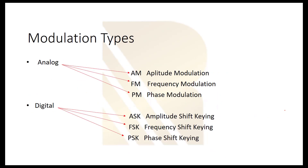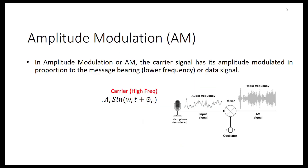So let's talk about some modulation types. We have analog and digital modulation. Analog includes AM — amplitude modulation, FM — frequency modulation, and phase modulation. For digital we have ASK — amplitude shift keying, FSK — frequency shift keying, and PSK — phase shift keying. Let's start with amplitude modulation, or AM.